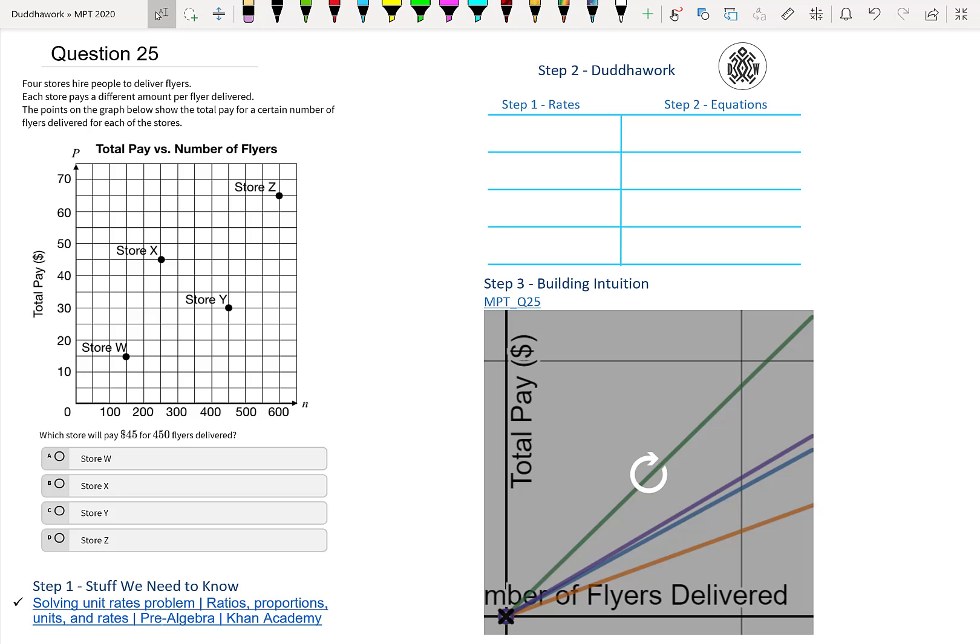And now the first step to solving any problem is to actually understand what's going on. And I won't lie here, I actually had to look at the graph for a few seconds and think, okay, what is this telling us? It's not obvious. For example, we're asked $45 for 450 flyers. Well, this is the dollar axis, the Y axis. So 45 is here, and then 450 is here. So there's nothing that lies here.